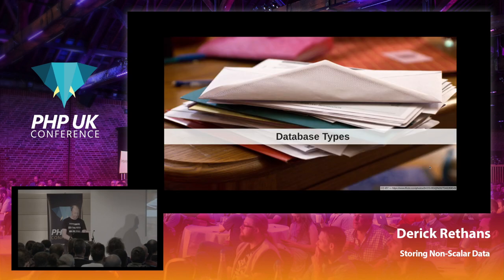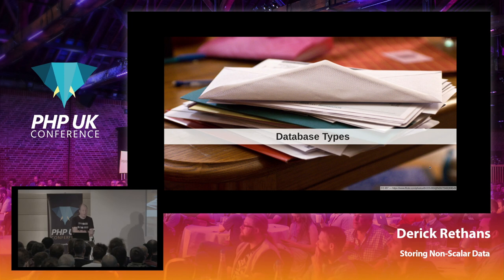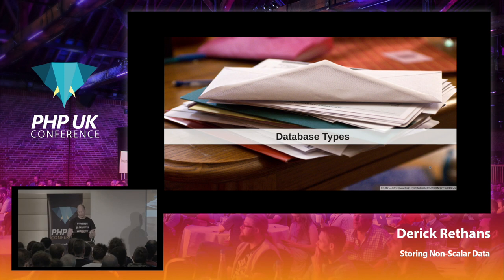So, different database types. How many do you think there are? There's relational databases, key-value stores, document data stores, XML data stores — there's an article on Wikipedia listing 57 different types. I tend to group them into about four different categories, of which I'll be talking about three, not including relational databases in this presentation.